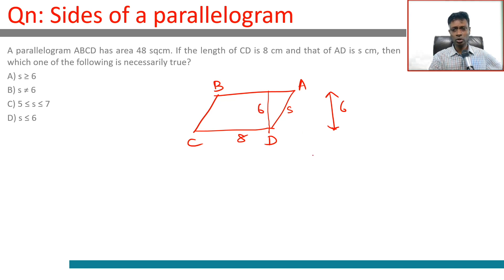Which one of the following is necessarily true? This is a right triangle with 6 as the height and s is the hypotenuse, so s is greater than or equal to 6. That we know for sure - it cannot be less than 6.